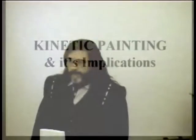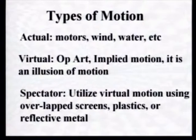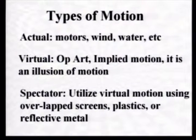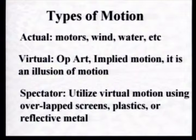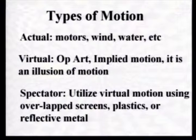This is my presentation on kinetic painting and its implications. Before I can explain what kinetic painting is, I have to explain three basic motions. There are a lot of different types of motion but they all fit under three categories. Actual motion is one category — it can be an art form controlled or powered by motors, wind, or water. One example of that would be a mobile.